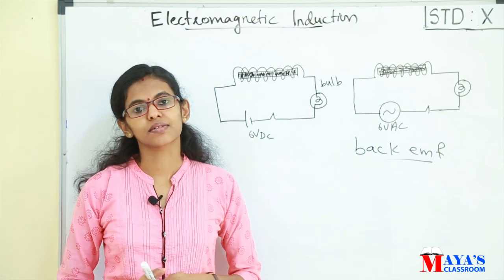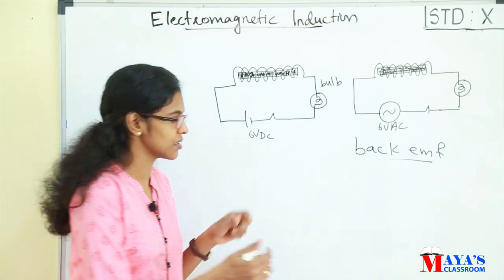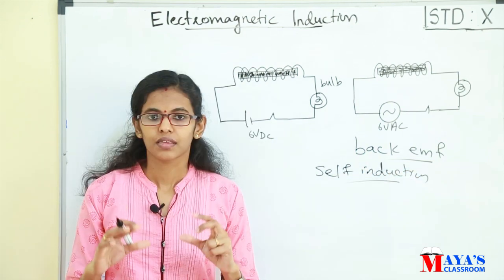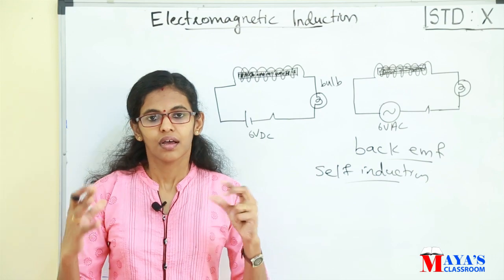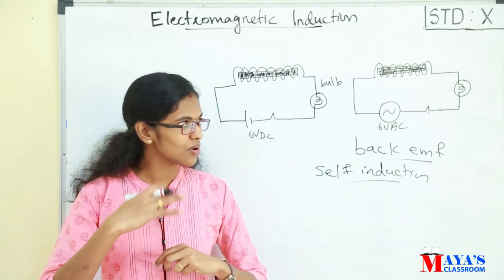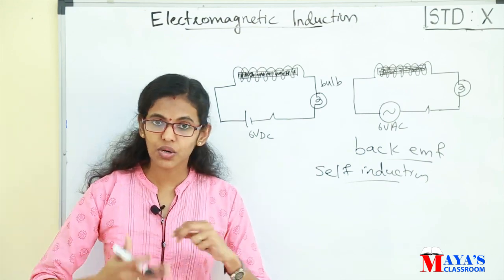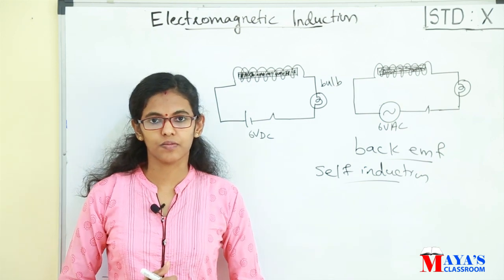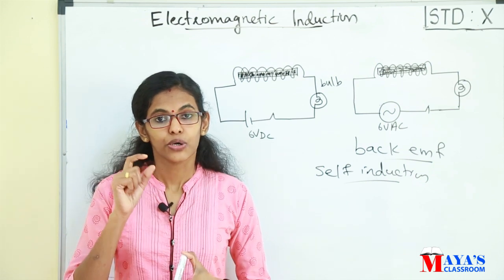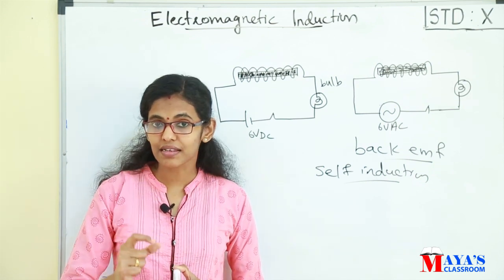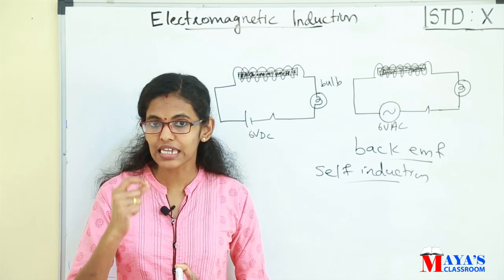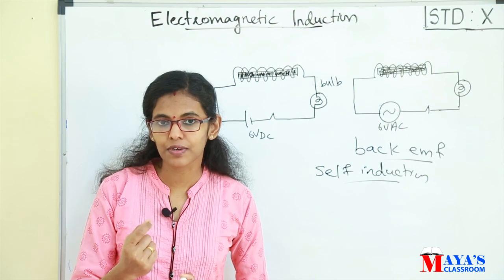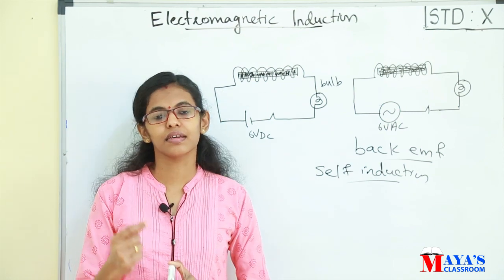That phenomenon is known as self-induction. The change in magnetic flux due to the flow of AC in a solenoid generates an EMF in the same solenoid. That EMF is known as back EMF, and it is opposite to the direction of the applied AC.